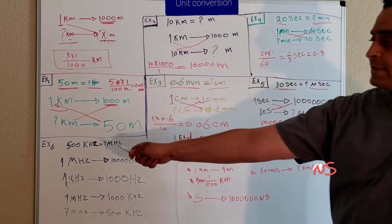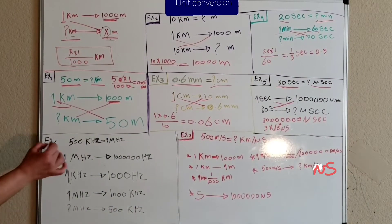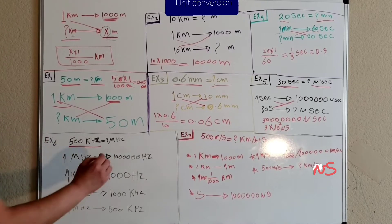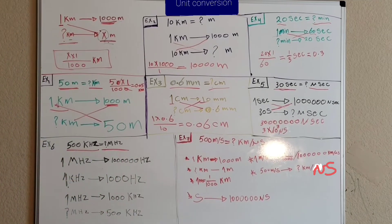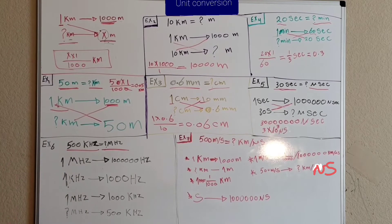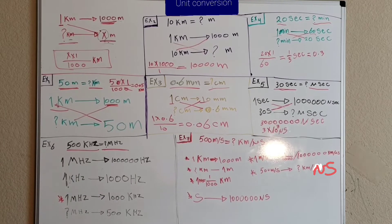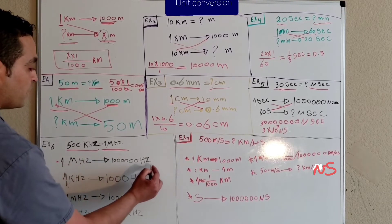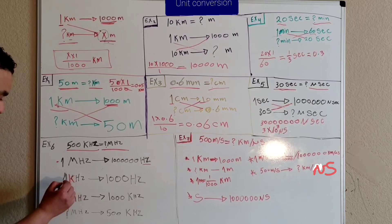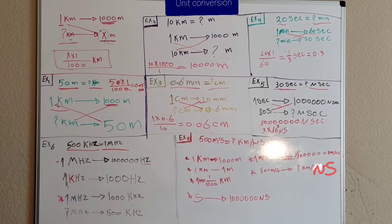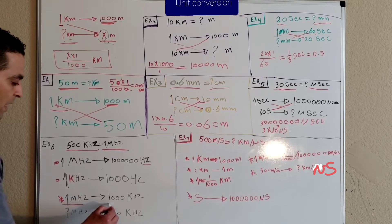Example number six: we have 5 kilohertz and we need to convert it to megahertz. One megahertz equals one thousand kilohertz. If you don't know that, you can figure it out: one megahertz equals one million hertz, and one kilohertz equals one thousand hertz, so from these two facts we conclude that one megahertz equals one thousand kilohertz.